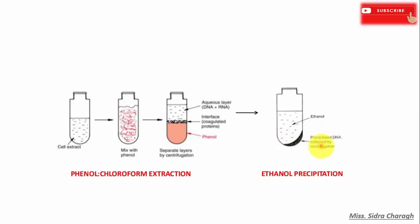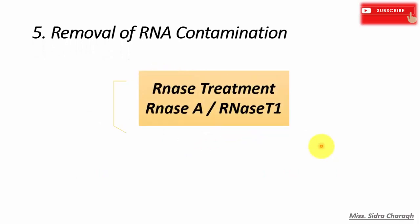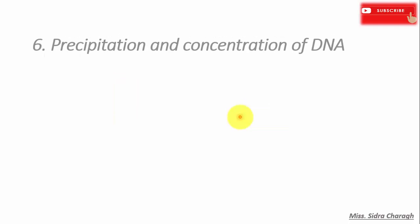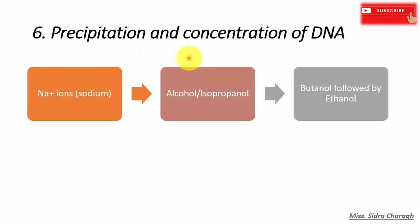In ethanol precipitation, ethanol helps to precipitate DNA, which is then collected by centrifugation. The fifth step is removal of RNA contamination, where we use RNase treatment. RNase A and RNase T1 are used to remove RNA from the DNA preparation.